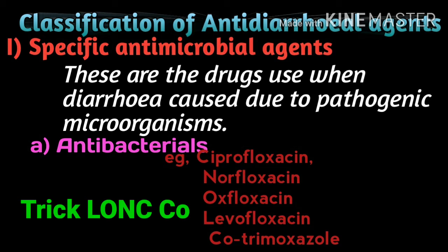When diarrhea is caused by specific bacteria, we use antibacterials. The examples are: ciprofloxacin, norfloxacin, ofloxacin, levofloxacin, and cotrimoxazole — these five drugs are used when diarrhea is caused by bacteria. A memory trick: 'Nancy' — N for norfloxacin, A for... floxacin, C for ciprofloxacin, Y for... and cotrimoxazole.